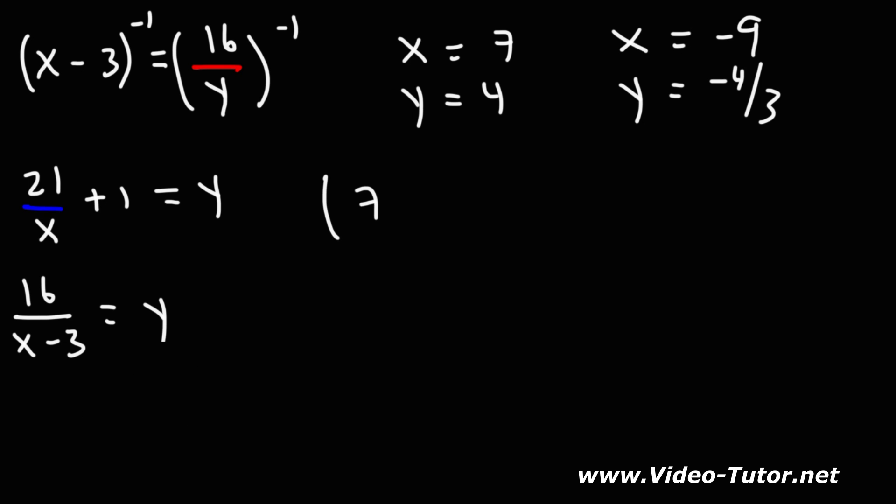So we can write our answer as an ordered pair. The first one is 7 comma 4. The second one is negative 9, negative 4 over 3.